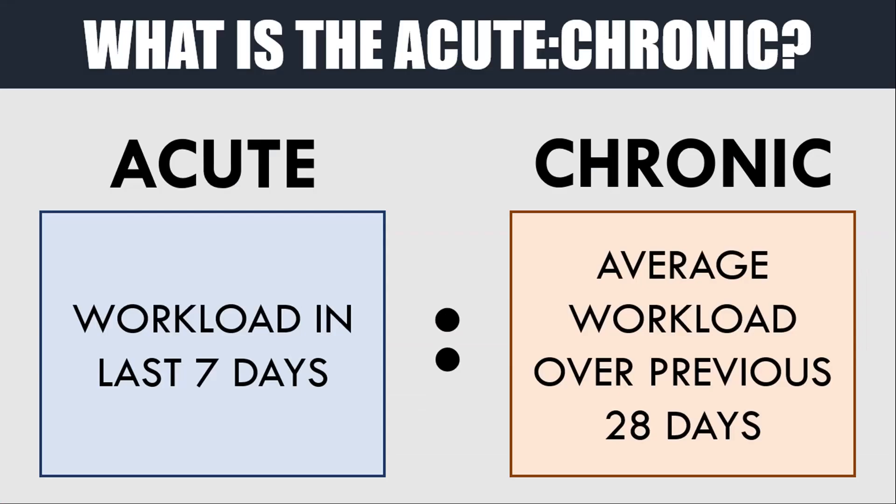First we need to understand what the acute to chronic workload ratio is. Essentially it is a ratio between how much workload has been done in the last seven days versus the average weekly workload that has been performed over the previous 28 days — basically how much workload has been performed in the last week compared to the previous month.